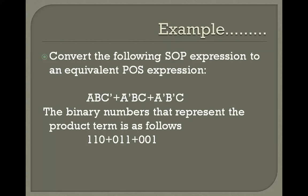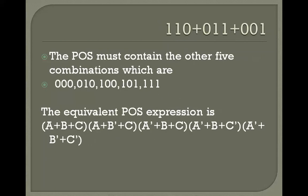The domain of this expression is 3 variables, therefore the total combinations of binary equivalents will be 2 raised to the power 3, which equals 8. We are only using 3 combinations, so the remaining 5 combinations must be considered in the POS. Those remaining combinations are: 0·0·0, 0·0·1, 0·1·0, 1·0·1, and 1·1·1.